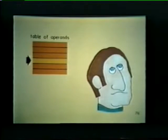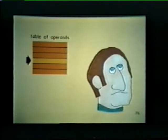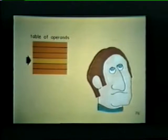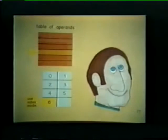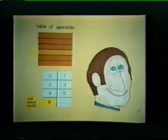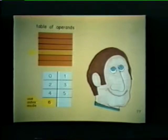Earlier, our programmer used the auto increment mode to step through a table of operands. Now he's confronted with a different situation. He wants to access just one entry in the table. Is there an addressing mode that allows our programmer to go directly to any entry in his table? Yes, there is. It's called the index mode, or more simply, addressing mode 6.